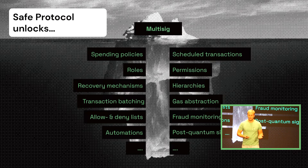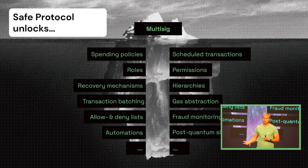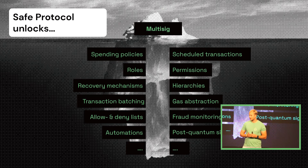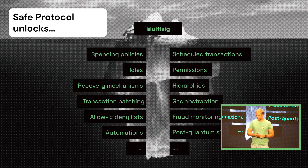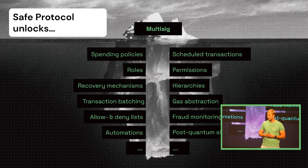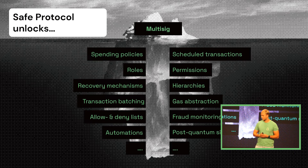Then there are allow and deny lists — for example, having an on-chain registry of malicious contracts or addresses to prevent your account from interacting with them, restricting your account from being tricked into malicious transactions. Or automations: you can have an if-this-then-that kind of scheme in your account that, for example, liquidates a lending position in certain scenarios. You define certain on-chain triggers and have outcomes come from that.